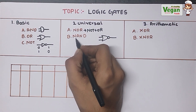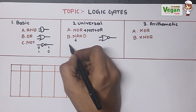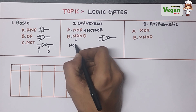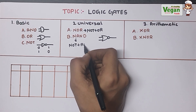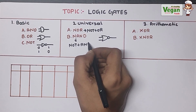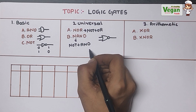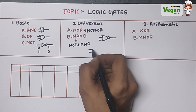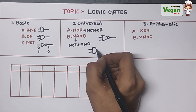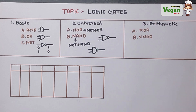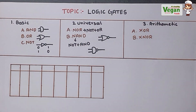Next is the NAND gate. NAND gate is the combination of NOT gate with AND gate. First we write the AND gate, and then we add the NOT. So it will have two inputs and a single output — that is the NAND gate.